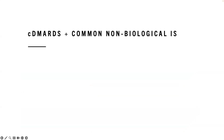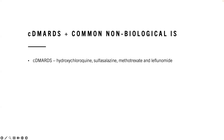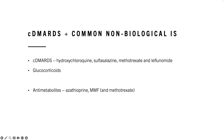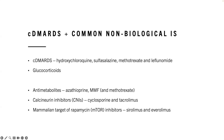Conventional DMARDs and other common non-biological immune suppressors include hydroxychloroquine, sulfasalazine, methotrexate, and leflunomide. Importantly, this also includes glucocorticoids, which may not be considered a conventional DMARD but are important in any conversation about immune suppressors and infectious disease risks. Other drugs used similarly include azathioprine, MMF (anti-metabolites), calcineurin inhibitors such as cyclosporine and tacrolimus, and mTOR inhibitors such as sirolimus and everolimus.